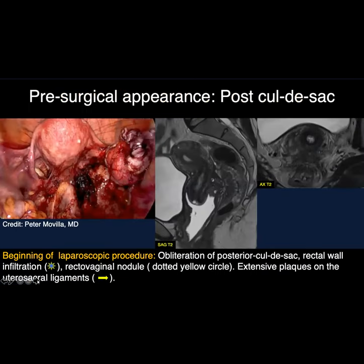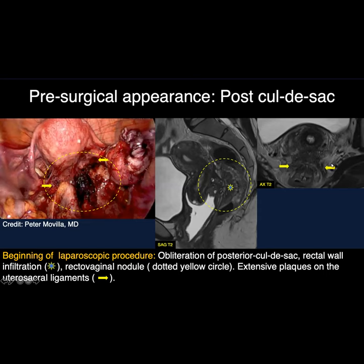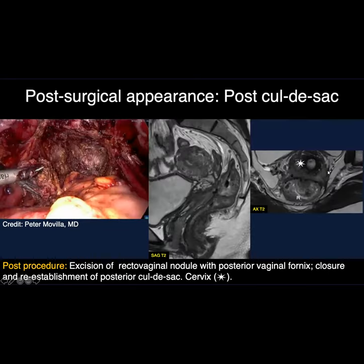Here is a patient at the beginning of a laparoscopic procedure. As you can see on this laparoscopic image, there is obliteration of the posterior cul-de-sac. There are rectal wall infiltrates shown by this star, and this rectovaginal nodule creates the classic mushroom cap sign infiltrating the anterior rectal wall. You also see large infiltrates involving the bilateral utero-sacral ligaments. The post-surgical image shows the surgeon has beautifully excised the entire rectovaginal nodule as well as implants on the posterior vaginal fornix, with re-establishment of the posterior cul-de-sac.